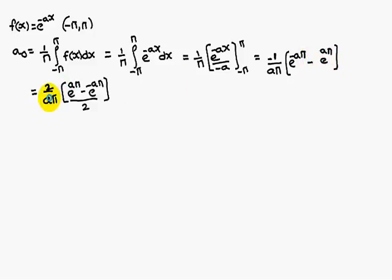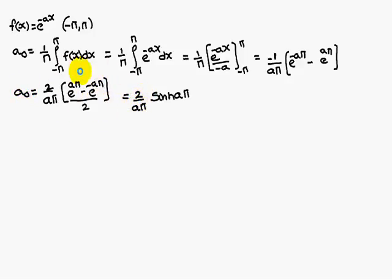For our convenience, multiplying with 2 and dividing with 2. Therefore, 2 by a pi into, this is nothing but hyperbolic sine a pi, since e power theta minus e power minus theta gives hyperbolic sine theta. In place of theta, a pi is there. Therefore, a0 equals 2 by a pi into hyperbolic sine a pi.